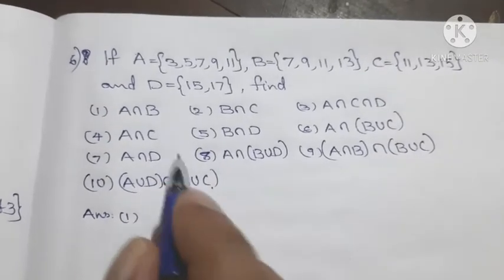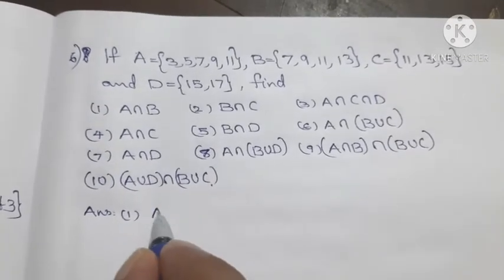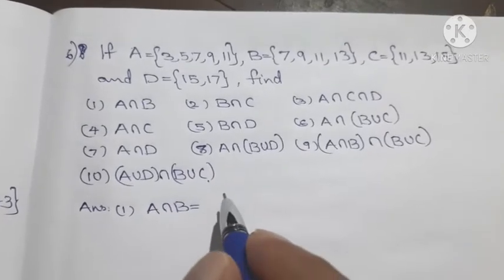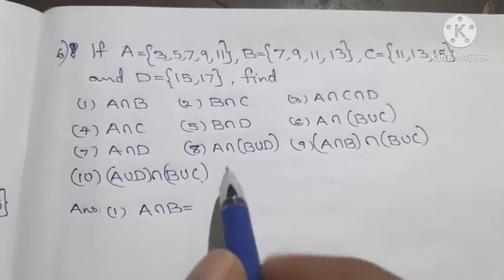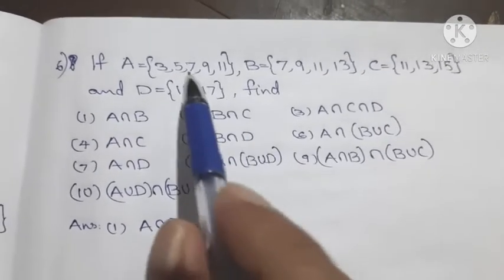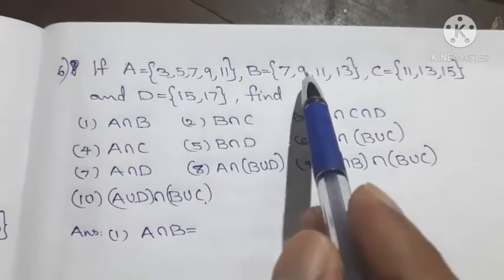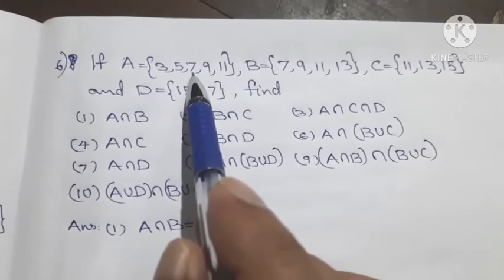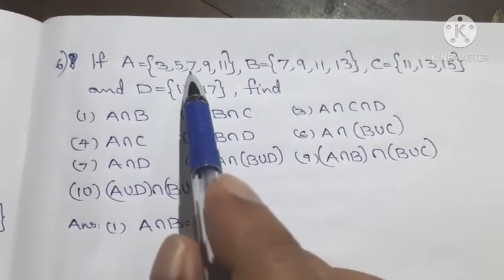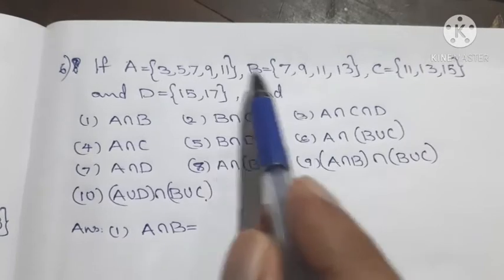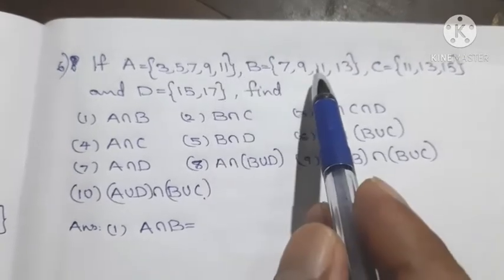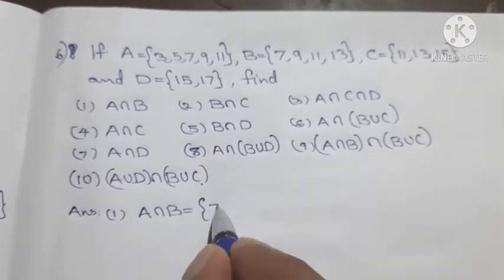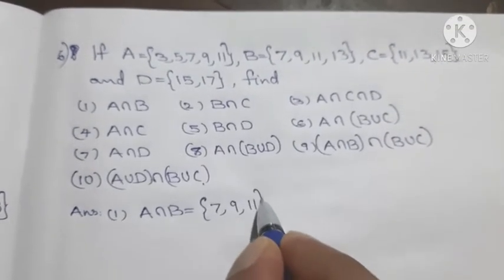A intersection B: looking at the two sets, the common elements are 7, 11. So A intersection B equals set {7, 11}.